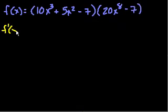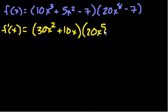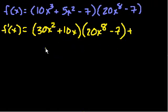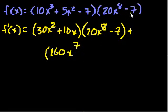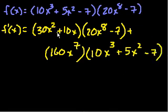So then f prime of x: the derivative of this first expression is 30x squared plus 10x, and we multiply it times 20x to the eighth minus 7. And we add that to the derivative of the second expression, which is 160x to the seventh — since 8 times 20 is 160 and the derivative of 7 is 0 — times the first expression: 10x to the third plus 5x squared minus 7. You could simplify by multiplying out or distributing and condensing terms, but that's really just algebra.